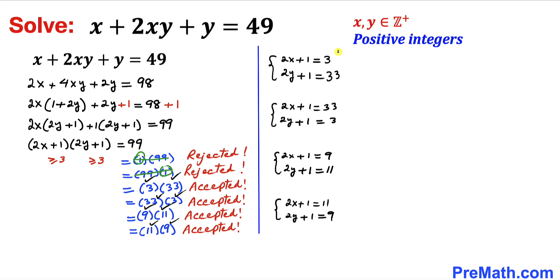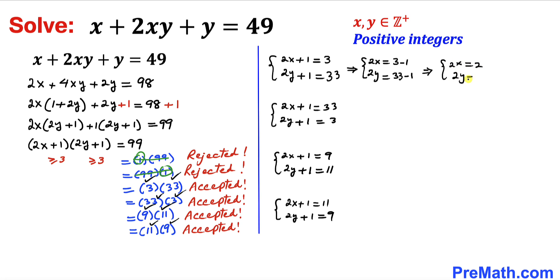For the first system: moving 1 to the right hand side gives 2x equals 3 minus 1 and 2y equals 33 minus 1, so 2x equals 2 and 2y equals 32. Dividing both sides by 2, our x value is 1 and y value is 16, giving us the solution (1, 16).